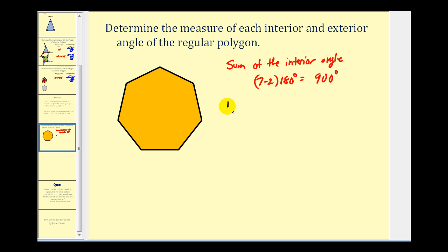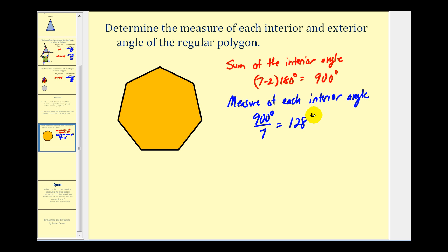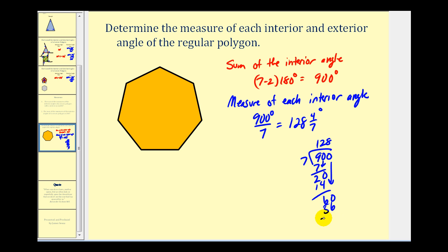The measure of each interior angle is 900 degrees divided by seven, since we have a regular polygon. Performing the long division: 900 divided by 7 equals 128 and four-sevenths degrees. The division works out as follows: 7 goes into 90 once (remainder 2), 7 goes into 20 twice (remainder 6), 7 goes into 60 eight times with a remainder of 4, giving four-sevenths.